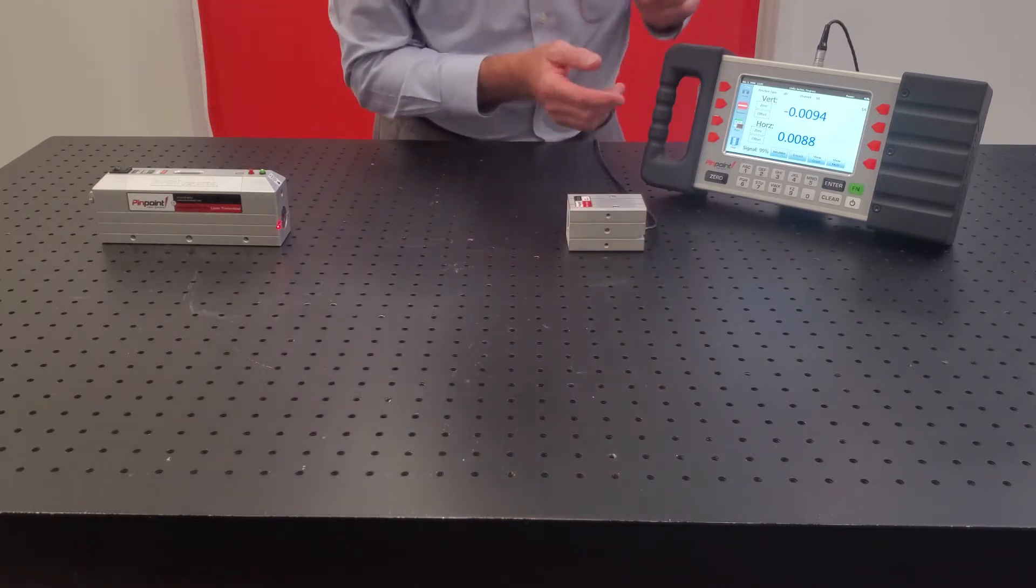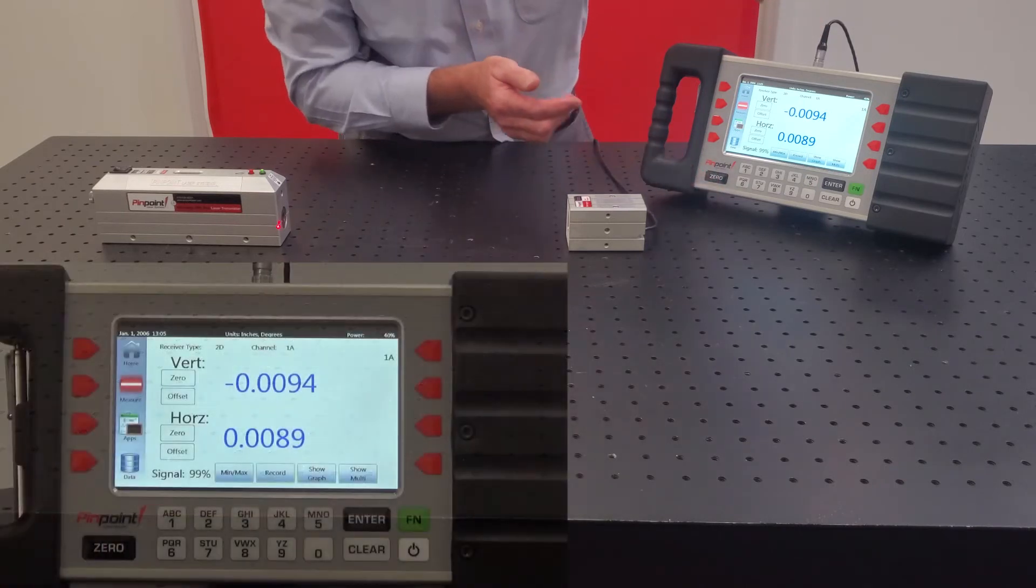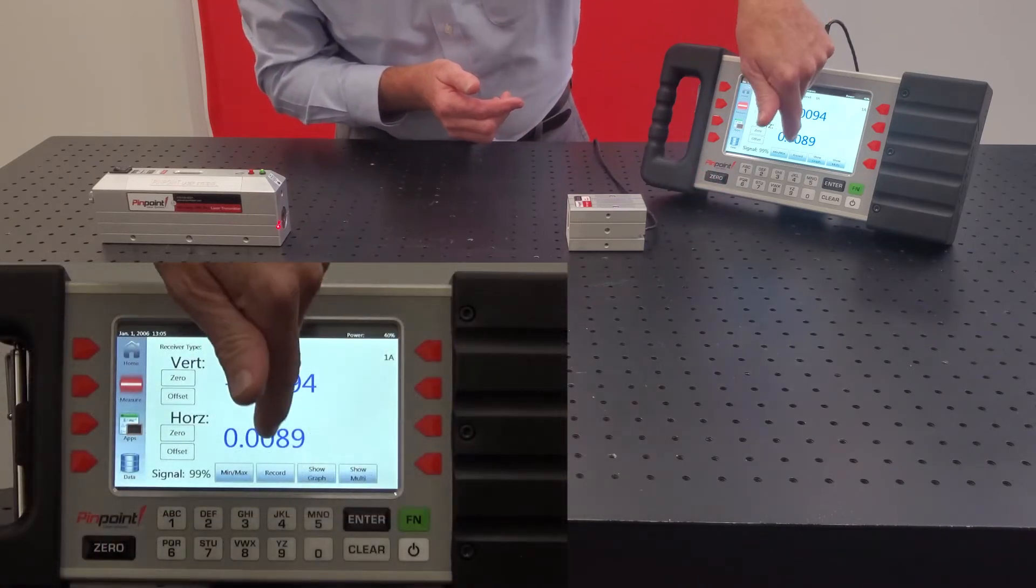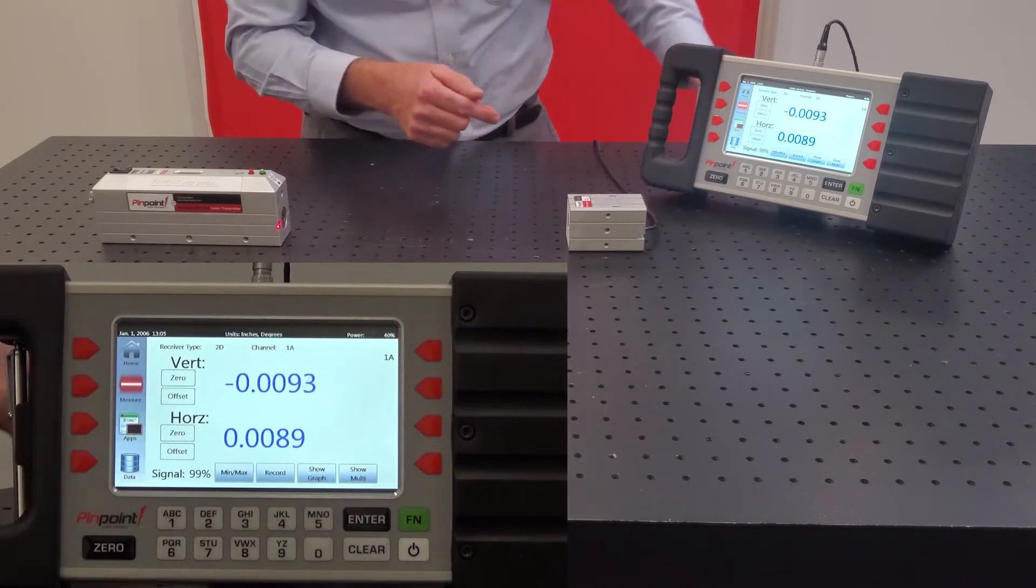The receiver is then attached to a display unit which shows the vertical reading and the horizontal reading of the receiver relative to the laser beam.